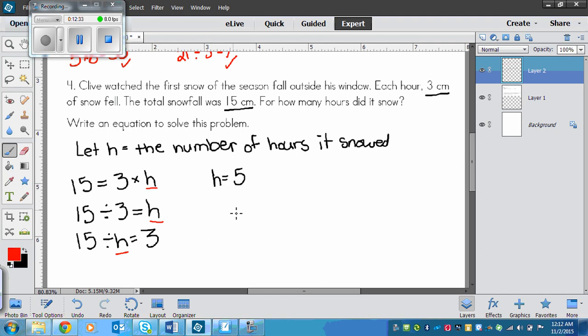Then we can check. We can go 15. Does that equal 3 times 5? Yes. 3 times 5 is 15. So then we would finish off with a sentence. Here's my sentence. It snowed for 5 hours. It doesn't have to be an intricate sentence. It just needs to show that you know what you solved. What part of the problem you solved.